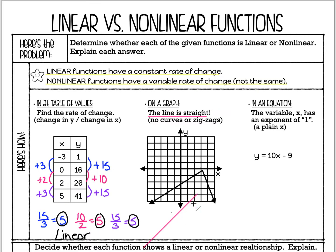This one is nonlinear because the line goes up and then comes back down. Even though it's made up of two straight line segments, that does not mean it's linear — it has to be one continuous straight line. Another way to think about it: this line has a positive slope going up, and then a negative slope going down. A positive slope followed by a negative slope means it's not the same rate of change.